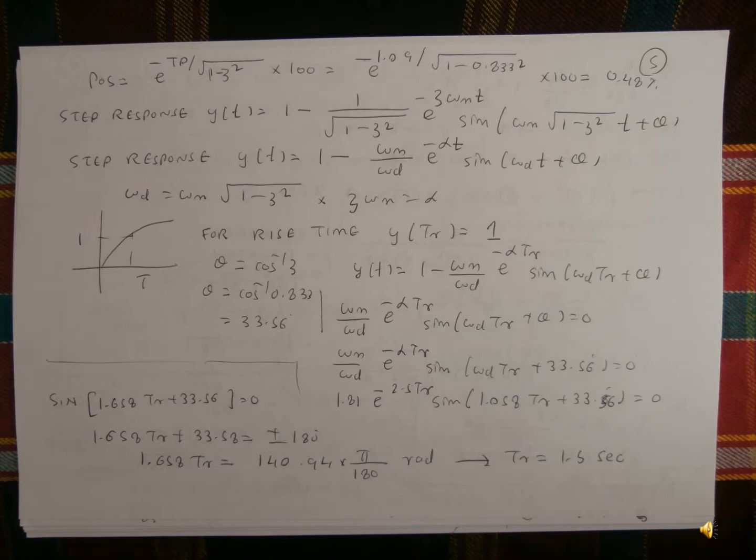In this case, ωd equals square root of 1 minus z squared multiplied by ωn, and z·ωn equals α. We can now draw the equation. When y(ti) equals 1, theta is equal to cos inverse of z, so theta equals cos inverse of 0.833, which gives 33.5 degrees.